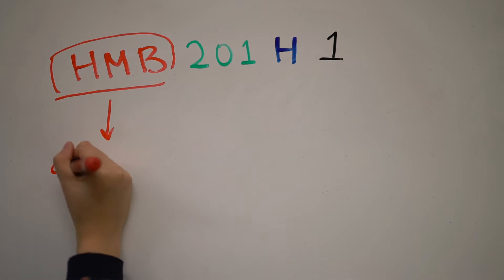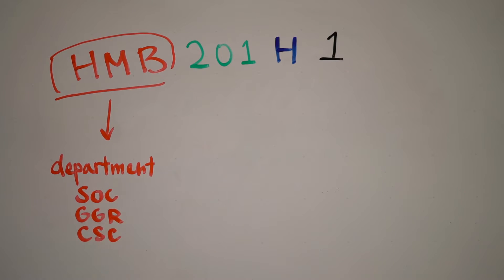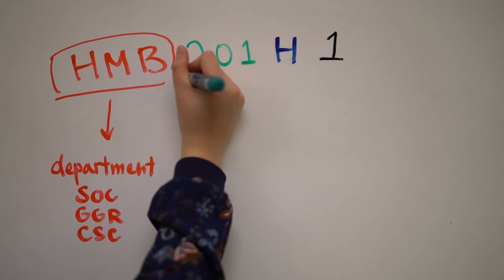The course designator is a combination of three letters that indicates the department or college that offers the course.